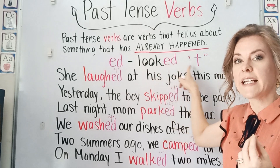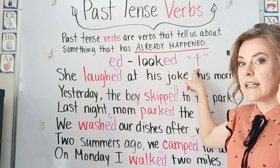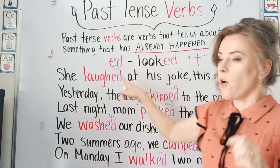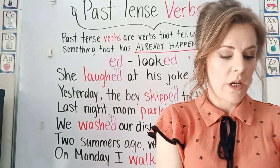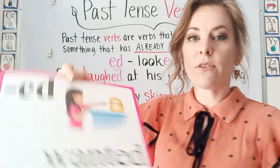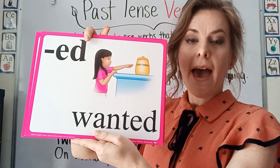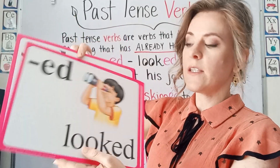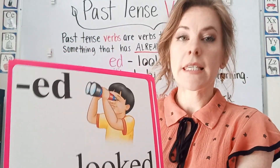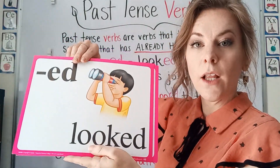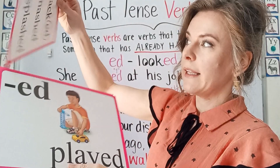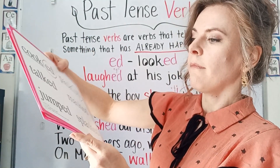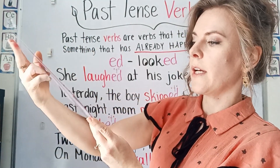It makes a T sound. So the first sound we looked at was E-D — short E and D, as in 'wanted.' And this second one is T, as in 'looked.' Let's look at some other examples.